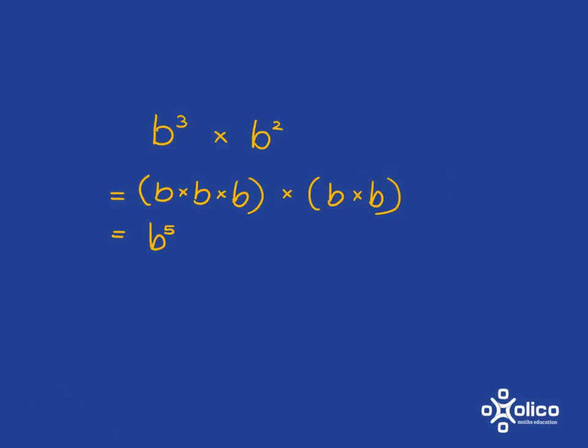If you've got b cubed multiplied by b squared, if we just write out what b cubed means, it means b times b times b. What does b squared mean? It means b times b.